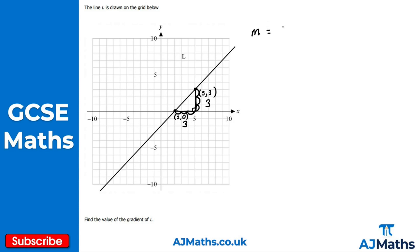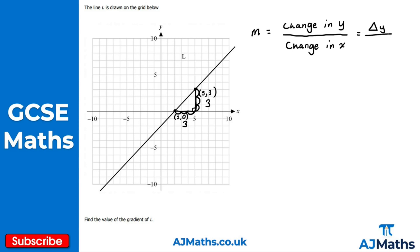To find the value of the gradient we use the letter m to represent the gradient. So m equals the change in y divided by the change in x — sometimes written as delta y over delta x. The change in y here is an increase of three, so it's three divided by three, which gives us one. So the gradient of line L for this first question is one. That means for every one unit we go along, we also go up one unit.